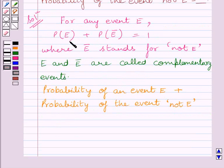So from this expression, we get probability of an event E plus probability of the event not E is equal to 1.